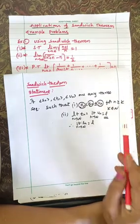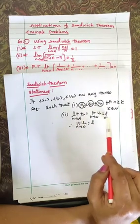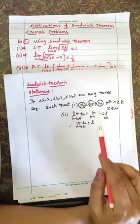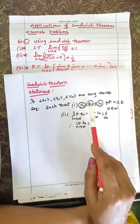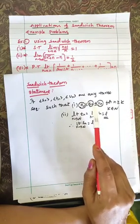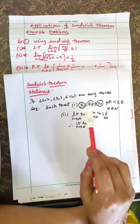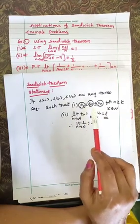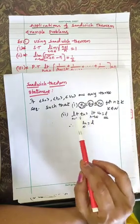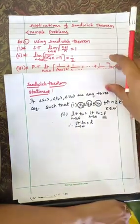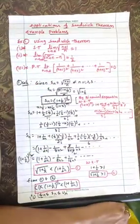Then if the limit of tn and limit of un both equal l, then the limit of sequence sn also equals l. In order to find the limit of a sequence sn, first we find the limits of these two sequences tn and un, which are the boundary sequences for sn.